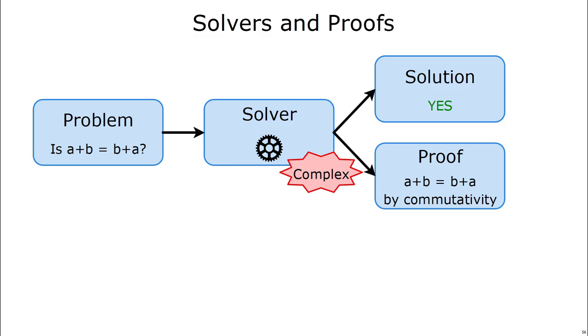And so in this case, the solver might say, I was able to say yes because A plus B is equal to B plus A by commutativity. We can take this proof and then run it through a simple proof checker, which will say whether the proof is valid or not. And because the proof checker is simple, we may trust it when it says the proof is valid, and therefore trust the solution to our original problem. And so in this way, we're able to trust the solver a lot more when the proof checker says the proof is right.